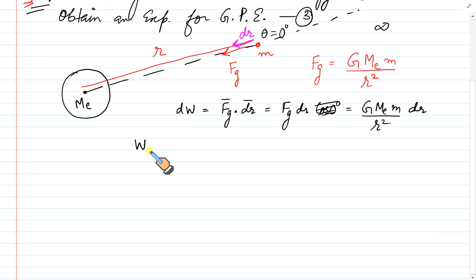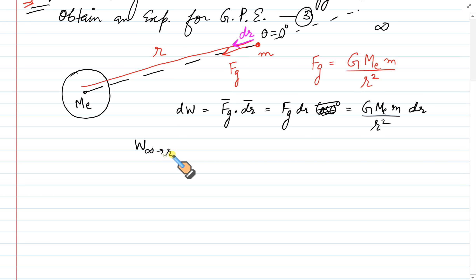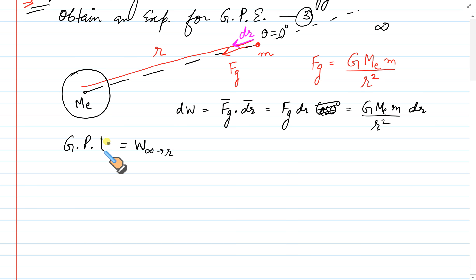Total work done in bringing a mass small m from infinity to that point is called gravitational potential energy. Work done from infinity to r in bringing any mass is called gravitational potential energy, جسے ہم Ug سے بھی denote کرتے ہیں۔